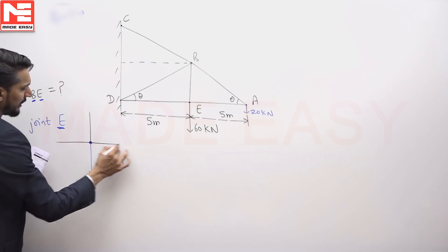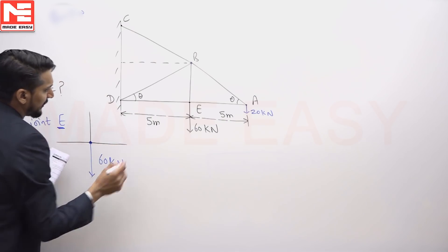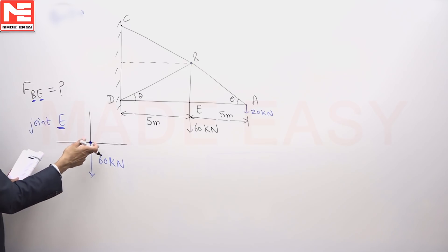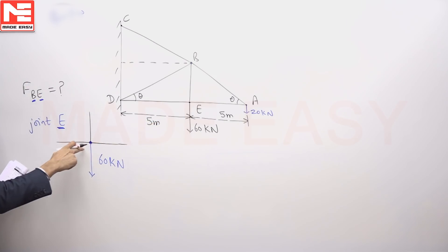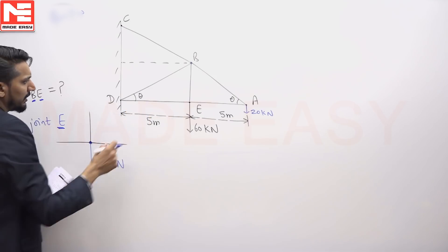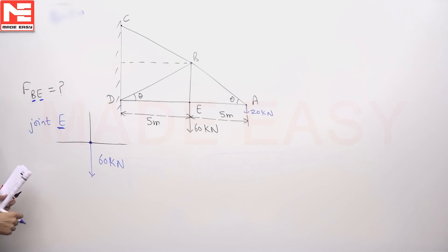There is 1 member BE and there is 1 member DE, there is another member EA. See these particular members, the members can offer force. EA member can offer force in this direction, DE can offer in this direction, BE can offer in the vertical direction. I hope you all understand that the force offered by member DE or EA will be in the horizontal direction.